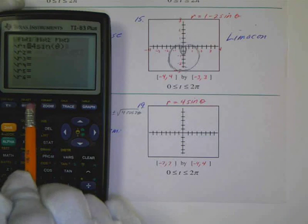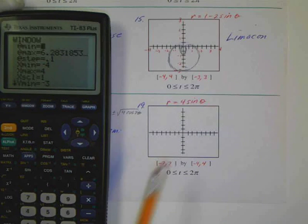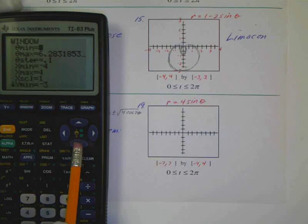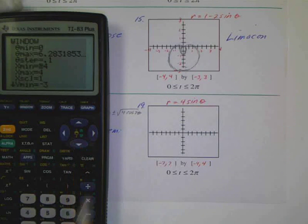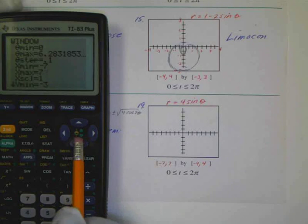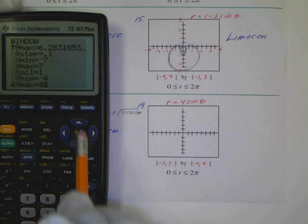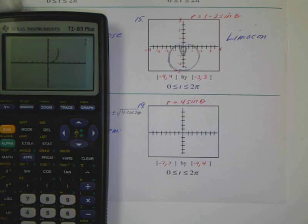I'll change my window a little bit. Remember my T-step is going to be 0.1. And I'll make it negative 7 to 7, and negative 4 to 4. And we'll graph this guy.